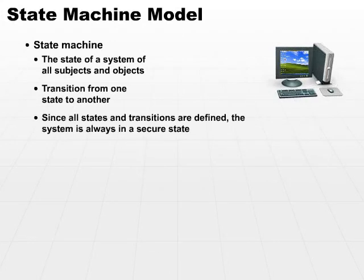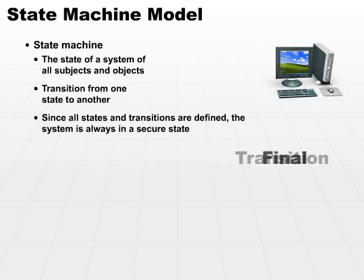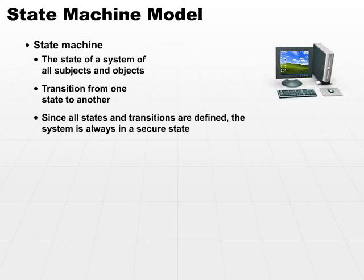Since they are always defined, the system is always in a secure state. It's either in one secure state — a source secure state — we are currently in a transition, or we are in a final secure state. Many of the following security models are built on the state machine concept, so it's important to understand what a state machine actually is.